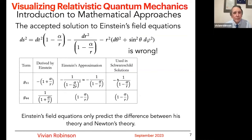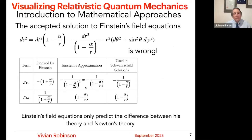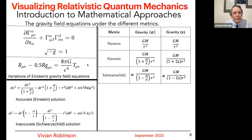The reasons for that are pointed out in the paper, but just to briefly go over them: he derived terms for g11 as minus 1 plus alpha over r, which he turned around and approximated to minus 1 over 1 minus alpha over r. That 1 minus alpha over r term is what is used in the solution. Now, when alpha over r is something like 10 to the minus 8, that's considered a very good approximation in anybody's language. Einstein's field equations are difficult enough that when they came up with this solution to his field equations, it really should have been the other form.